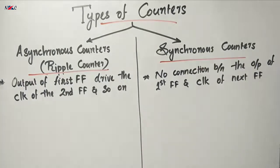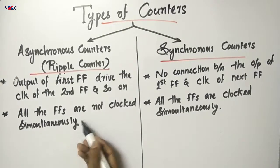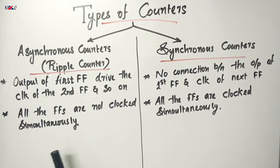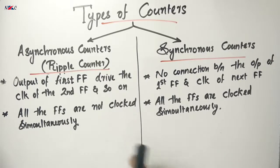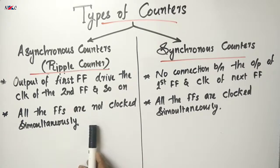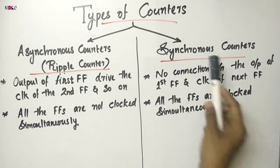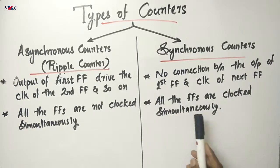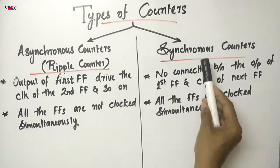In asynchronous counters, all the flip-flops are not clocked simultaneously. The first flip-flop is connected to the external clock, and the clock of the second flip-flop comes from the first flip-flop's output, and the third flip-flop is connected similarly. But in the case of synchronous counters, a single clock is applied simultaneously to all the flip-flops, so they are all clocked simultaneously.